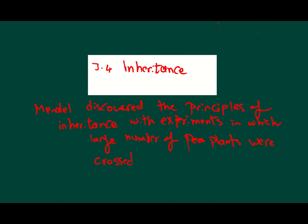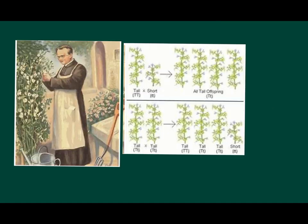Gregor Mendel discovered the principles of inheritance with experiments in which large numbers of pea plants were crossed. You can see here the first experiment done by Mendel when he crossed a tall plant with a short plant. He found that all the generations were tall, but he did not predict that at the start.